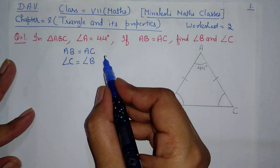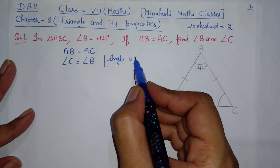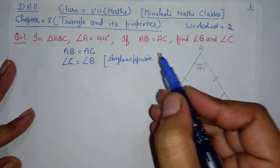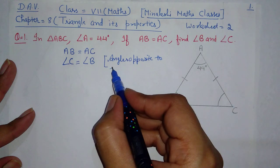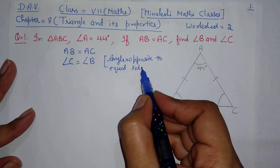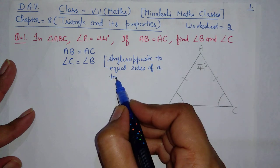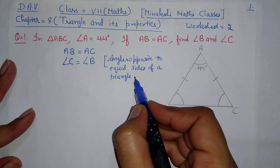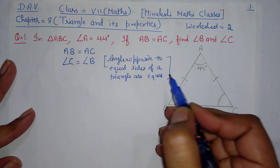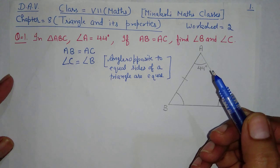Write the reason: angles opposite to equal sides of a triangle are equal. If the sides of a triangle are equal, the opposite angles will also be equal. Now we know that angle C and angle B are equal to each other.